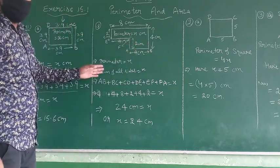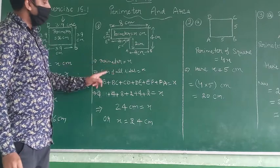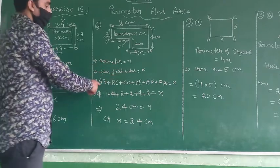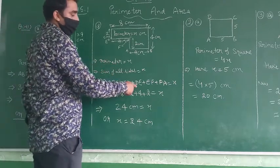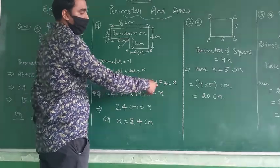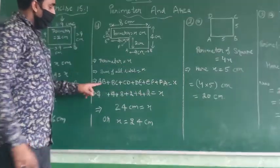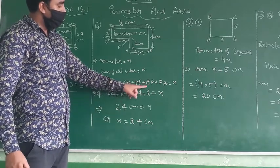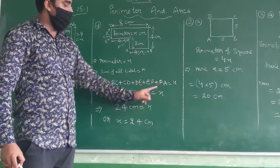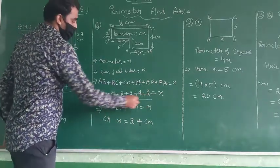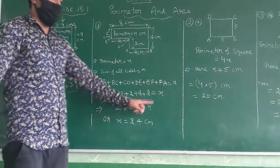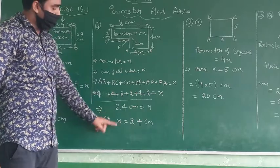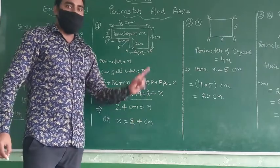Now perimeter means sum of all sides. AB plus BC plus CD plus DE plus EF plus FA equal to X. AB is 4, BC is 4, CD is 8, DE is 2, EF is 4, FA is 4 equal to X. Now add these all things: 24 cm. X means X is equal to 24 cm.